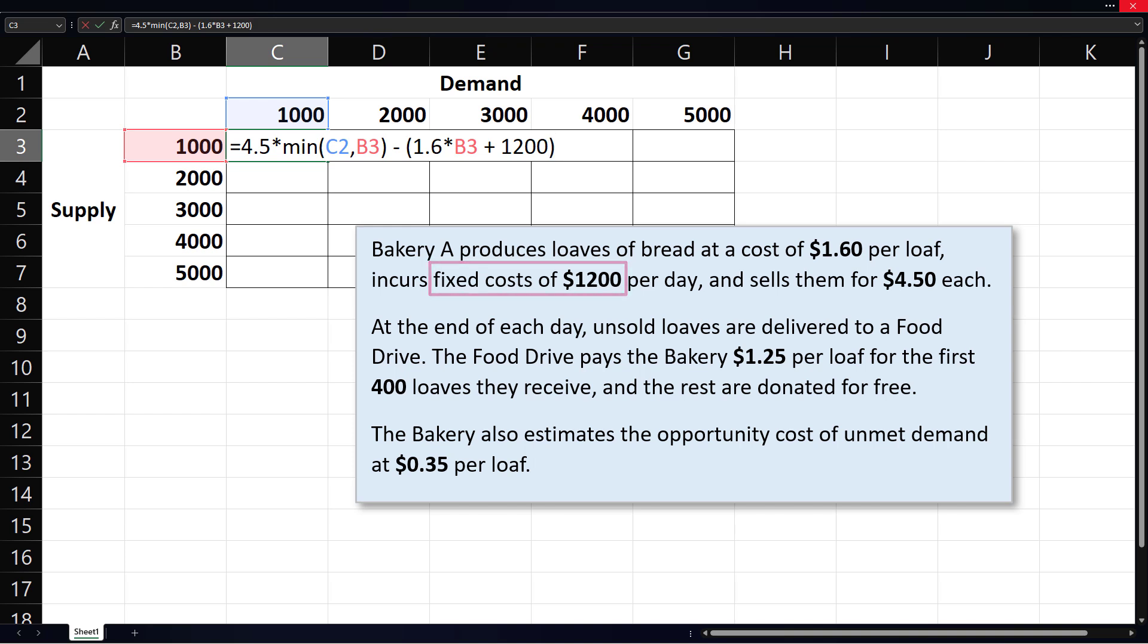The standard payoff problem usually ends there. But in this case, we can generate additional revenue if there are excess units that can be sold to a food drive. The food drive pays $1.25 for each of the first 400 loaves and gets the rest for free. So, the additional revenue will be $1.25 times supply units minus demand units.